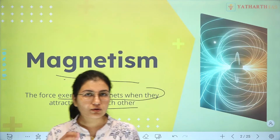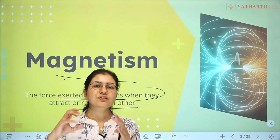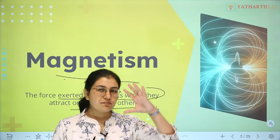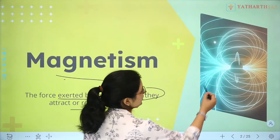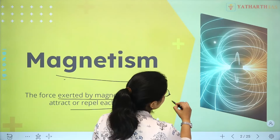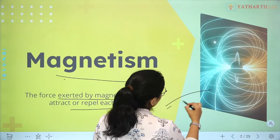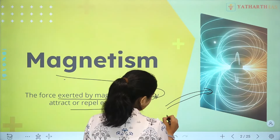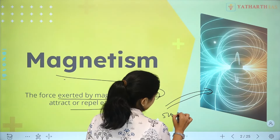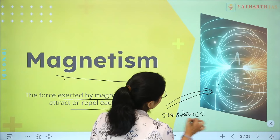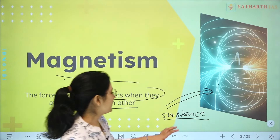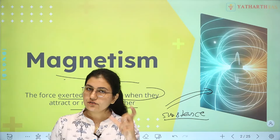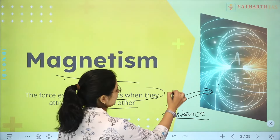Magnetism is the force exerted by magnets when they attract or repel each other. If a magnetic field is present, it can affect another substance — that substance will feel a particular force, either attractive or repulsive in nature.